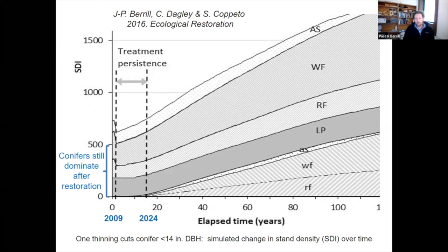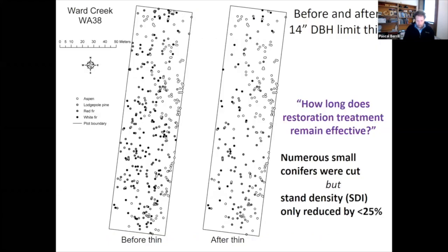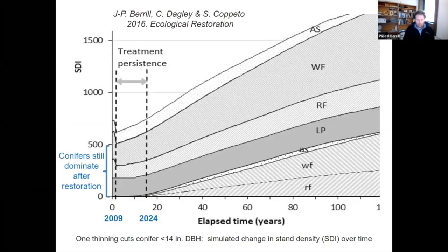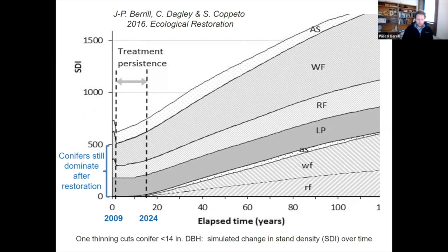After that thinning treatment, we removed some conifers but the stand still remains conifer-dominated, and the treatment only really persisted for 15 years in this particular scenario. Another treatment will be required around 2024, and for the planners out there, that's just around the corner in some sense.